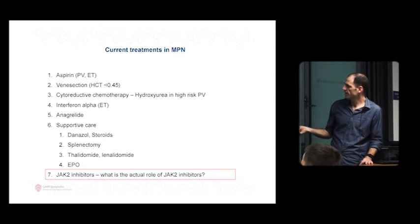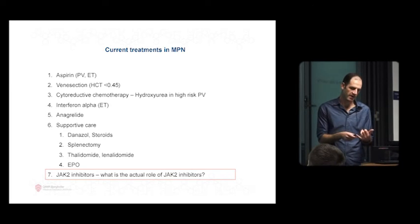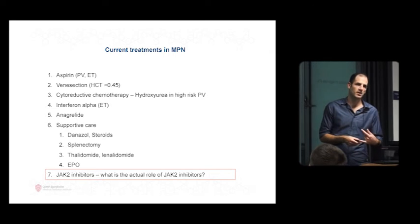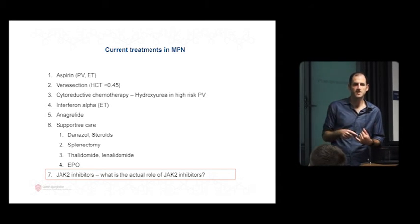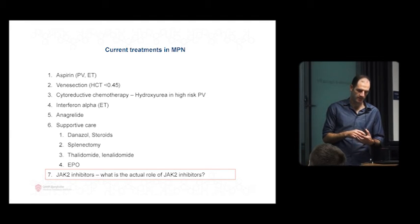There's been a bunch of other JAK2 inhibitors. One called Fedratinib was recalled globally because it caused some problems with patients' brain function and was deemed by the FDA to be a non-safe drug. There's other drugs in trial, like momelotinib, but none of those are licensed at the moment. So ruxolitinib is the only one we have access to in any patients at the moment.